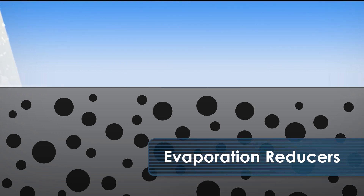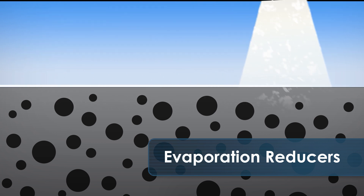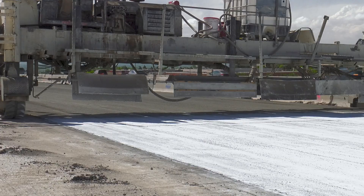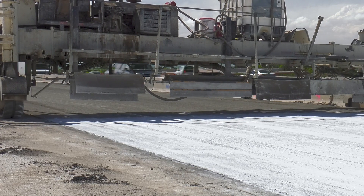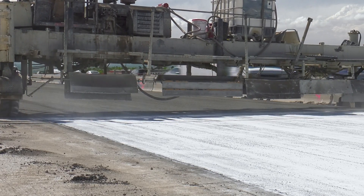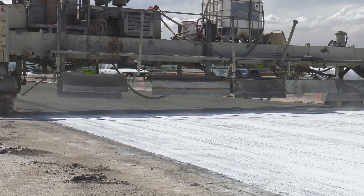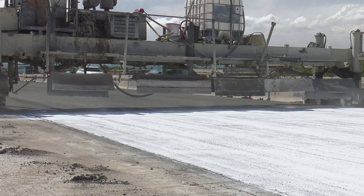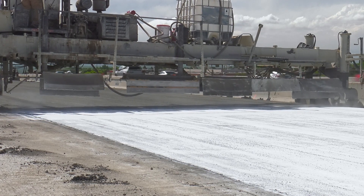Evaporation reducers are organic chemical solutions that form a film on the surface which reduces evaporation. They are applied by spraying them onto the fresh concrete surface when finishing operations are complete and before conventional curing begins.